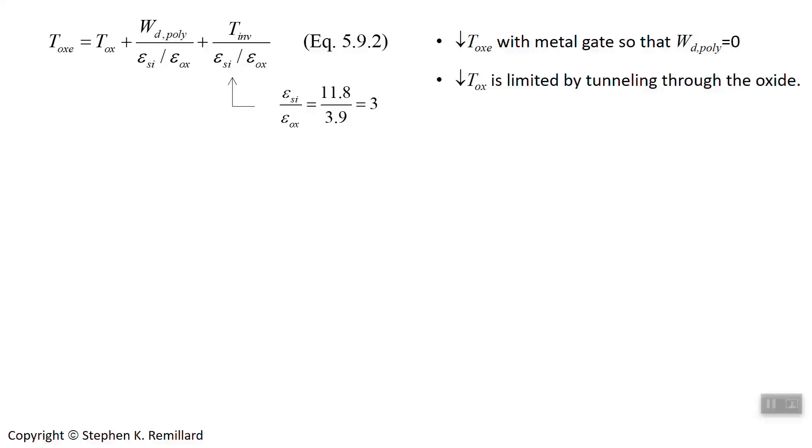We would really like to get this to be as small as possible because a thin oxide means a large oxide capacitance, which means that the depletion layer capacitance is not dominating the situation. There are three things that go into the electrical oxide thickness.